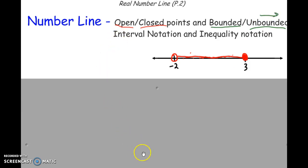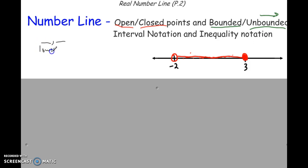Interval notation — some of you might be familiar with it. The way interval notation works: it has a number, comma, another number. The first number is the lower bound, and the second number is the upper bound. It's very important to put the larger number to the right. So in this case, the lower bound would be negative 2 and the upper bound would be 3.